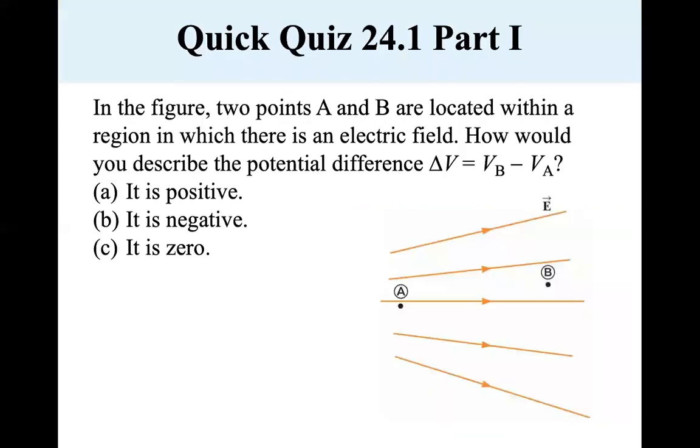Okay. Time for a quick quiz. In the figure, two points A and B are located within a region in which there is an electric field. How would you describe the potential difference delta V equals VB minus VA? Well, it's negative because it's increasing this way. So from B to A, it's negative.